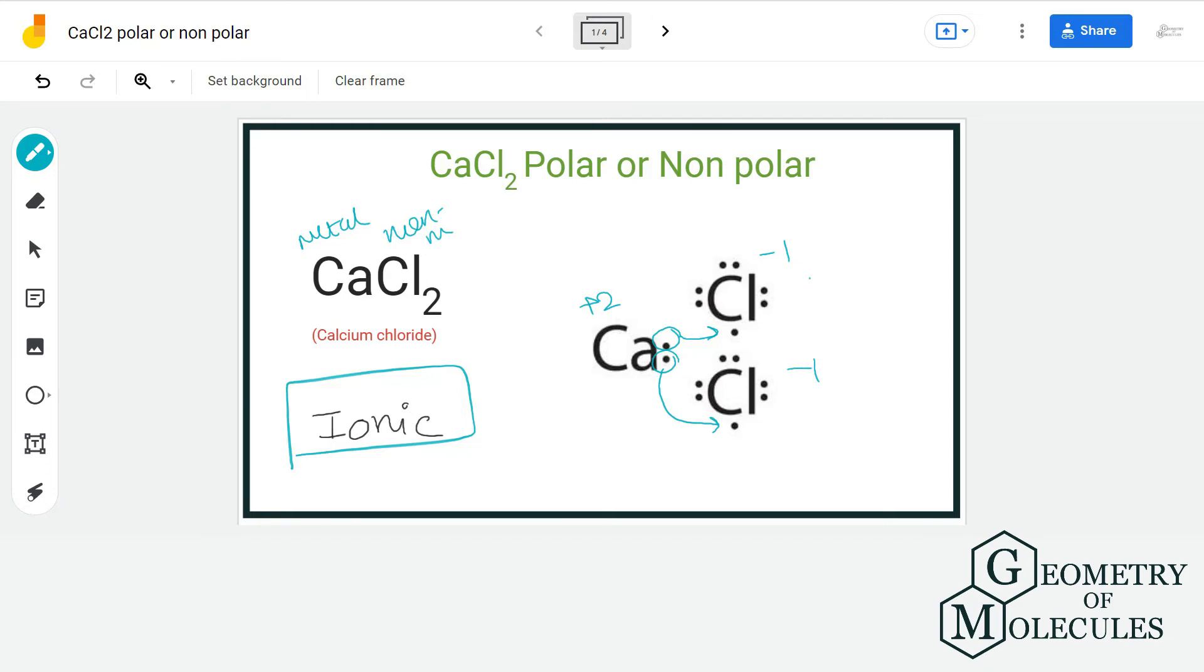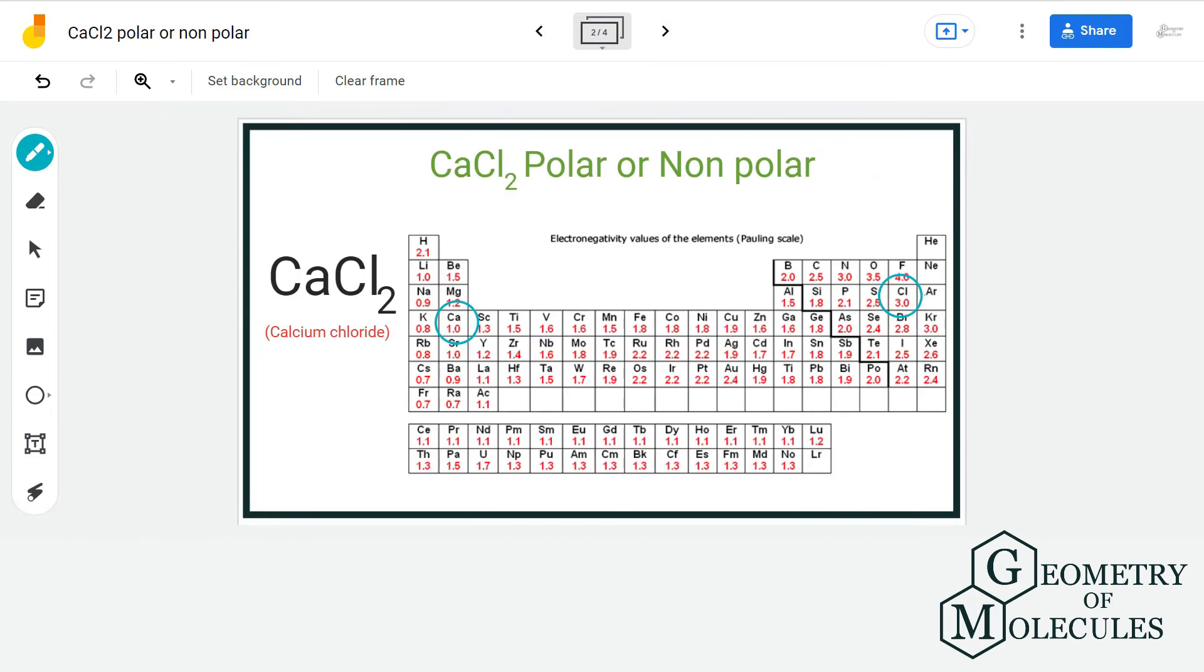When we look at the periodic table and calculate the electronegativity difference, it is higher than two, and compounds that exhibit this kind of property are known as ionic compounds.